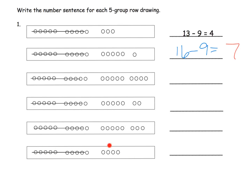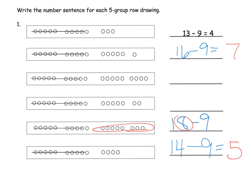Let's jump to this last one: we've got 10 plus 4 more is 14, and we're subtracting 9, so 14 minus 9. By this point, we want students to start to see that the answer is always going to be this group plus one more — so in this case, 4 plus one more is 5. For 18 minus 9, it's 8 plus one more, so the answer is 9. For 17 minus 9, the answer is 7 plus one more, which is 8. That's the kind of number sense pattern we want students to develop.